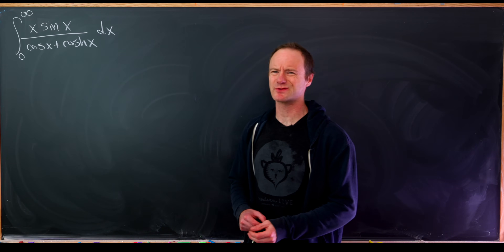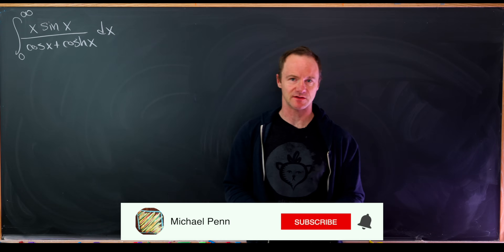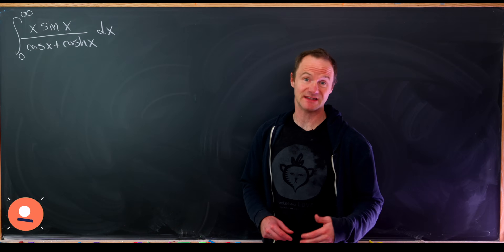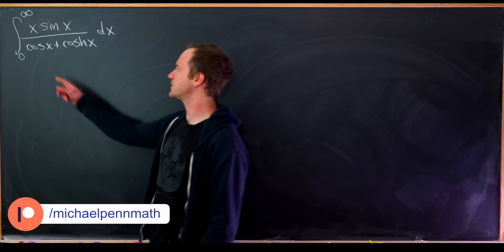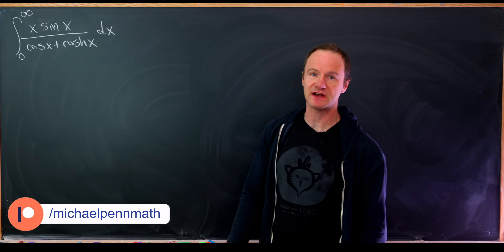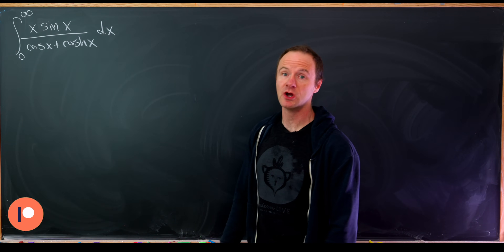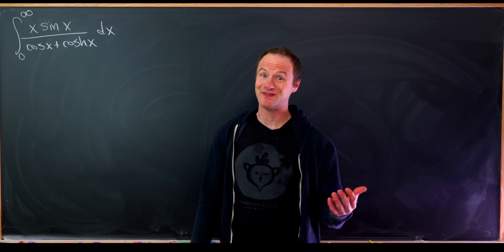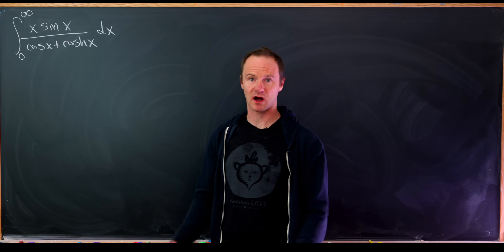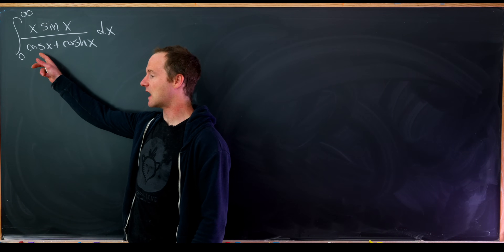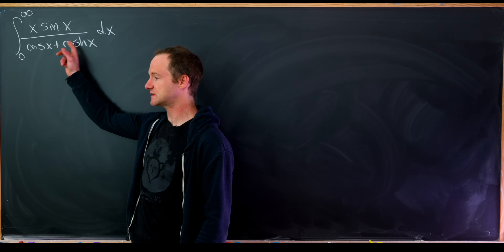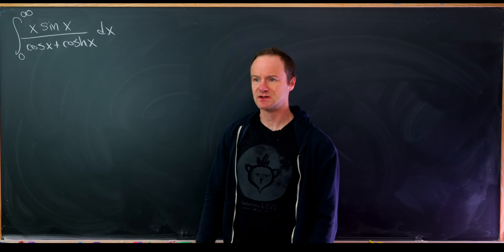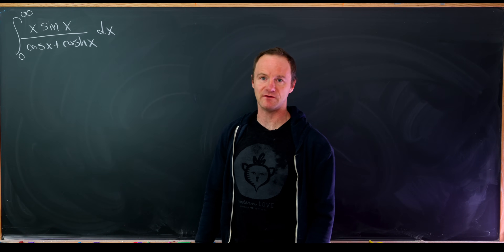Today we're going to explore an integral which doesn't look so crazy on the outset but will involve lots of really nice tricks in order to find its value. In particular we've got this integral from zero to infinity of x times sine x over cosine x times the hyperbolic cosine of x. In the denominator we've got a combination of cosine and the hyperbolic cosine. Recall that the hyperbolic functions are built out of exponentials, so that's going to give us some motivation for how to proceed.